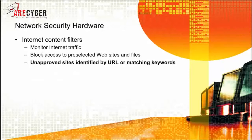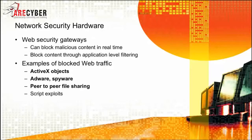Next are internet content filters. They monitor internet traffic and block access to pre-selected websites and file types, unapproved sites identified by URL or matching keywords such as gambling or sports. Next, you have web security gateways, which can block malicious content in near real-time through application-level filtering — for example, blocking ActiveX, adware, or peer-to-peer file sharing.